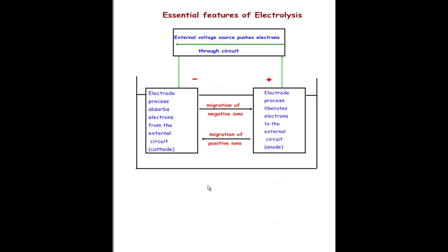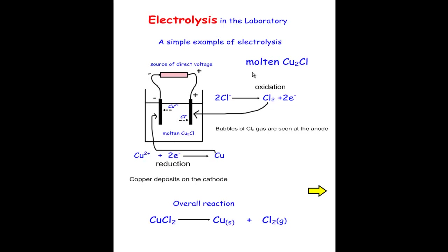The essential features of electrolysis: at the cathode — the negative electrode — the process absorbs electrons from the external circuit. Electrons are forced through by a battery or electrical current source. Negative ions migrate toward the anode side and positive ions migrate toward the cathode.